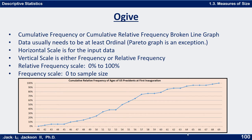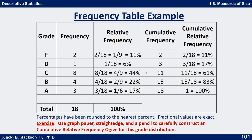Here we have age as the horizontal axis — age at first inauguration. So let's make an ogive for this data.